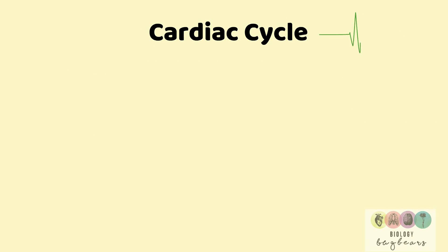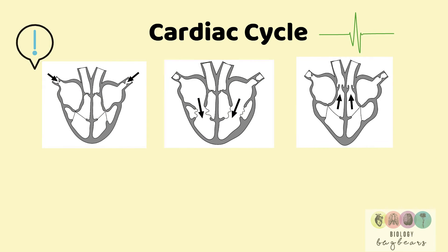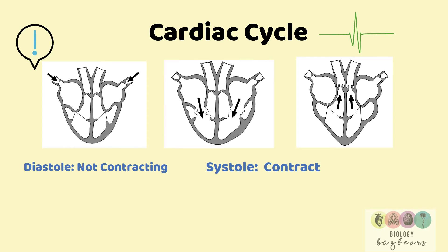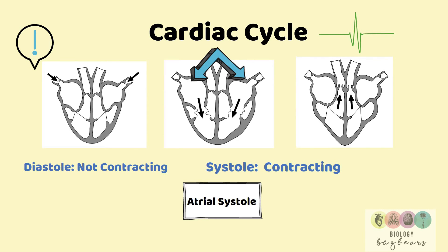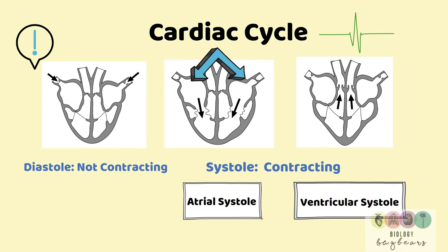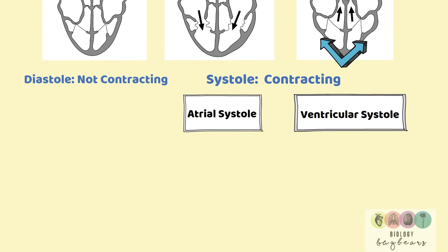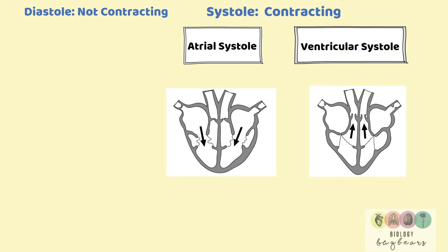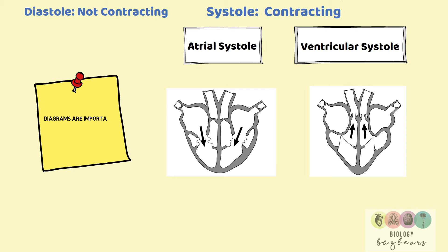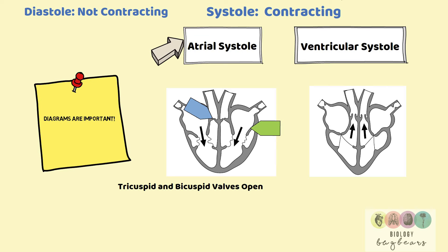The cardiac cycle, or how the heart beats, has appeared more frequently in exam papers recently, often with diagrams. There are two stages: diastole, when no part of the heart is contracting, and systole, when some part of the heart wall is contracting. There is atrial systole, when the walls of the atria — the top two chambers — are contracting, and then ventricular systole, when the walls of the ventricles — the bottom two chambers — are contracting. In atrial systole, the tricuspid and bicuspid valves are open but the semilunar valves are closed.